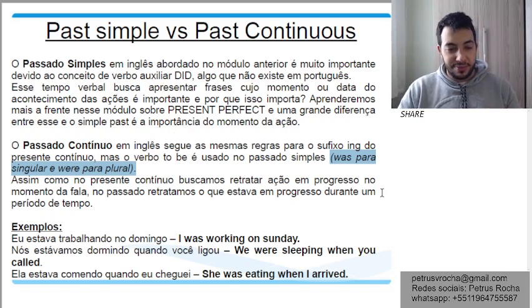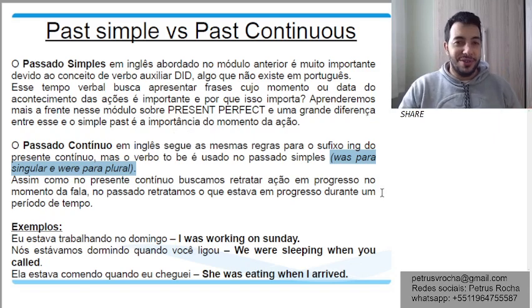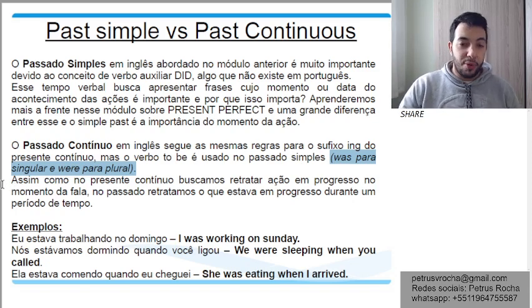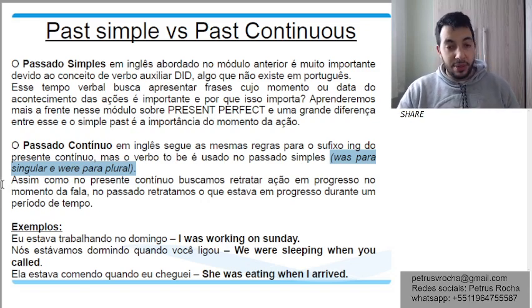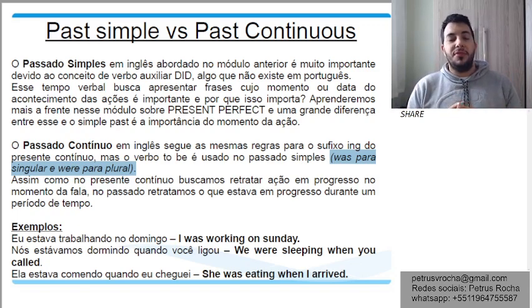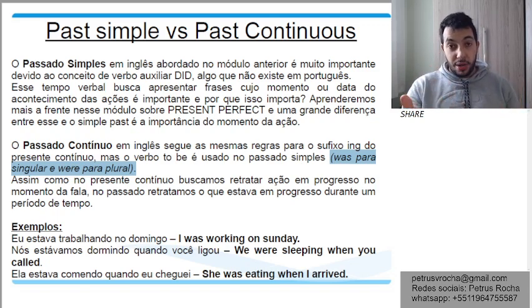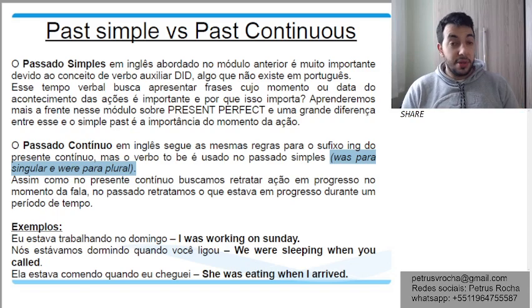Was, was. Agora é plural — were, were, were. Very good. Was, were. Assim como no presente contínuo, buscamos retratar a ação em progresso no momento da fala. No passado, retratamos o que estava em progresso durante um período de tempo. No presente contínuo, nós vimos que falamos do que está acontecendo agora, durante o momento da fala. Então: I am working — eu estou trabalhando. I am teaching English — eu estou ensinando inglês. You are learning — você está aprendendo. You are learning English — você está aprendendo inglês. Now — agora.